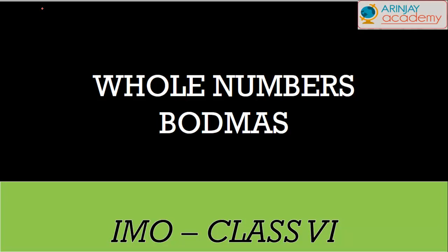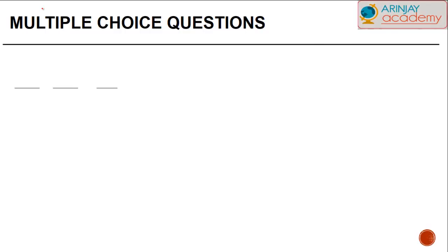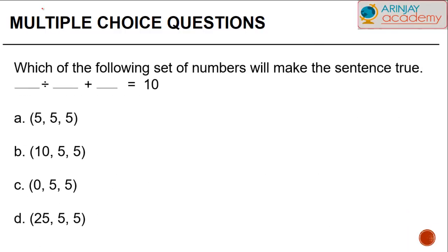Today we will learn about whole numbers property, i.e. BODMAS. So the question is, which of the following set of numbers will make the sentence true? Dash divided by dash plus dash will be equal to 10. We are given 4 options.